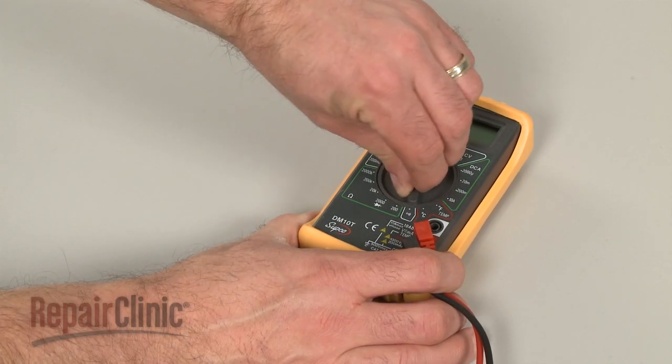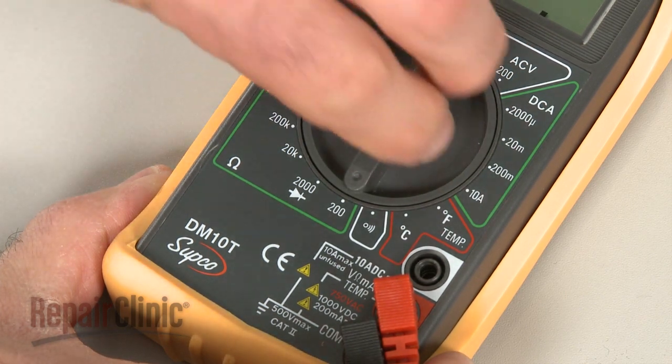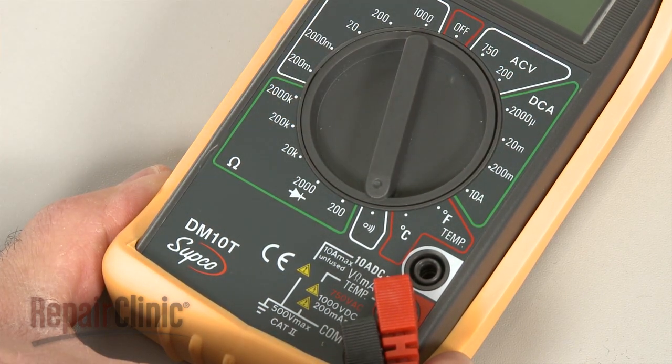When using a digital model, again rotate the dial to the lowest setting for ohms of resistance or resistance with tone if your meter has this option.